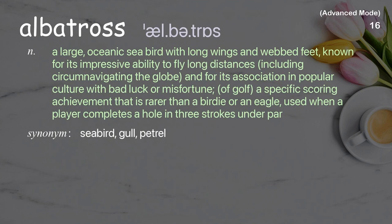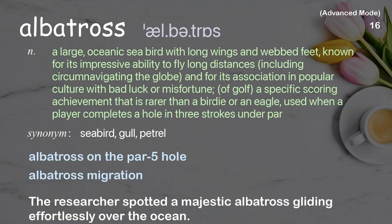Albatross: A large seabird known for its association in popular culture with bad luck or misfortune. In golf, a specific scoring achievement rarer than a birdie or eagle, used when a player completes a hole in three strokes under par. Examples: albatross on the par-5 hole, albatross migration. The researcher spotted a majestic albatross gliding effortlessly over the ocean.